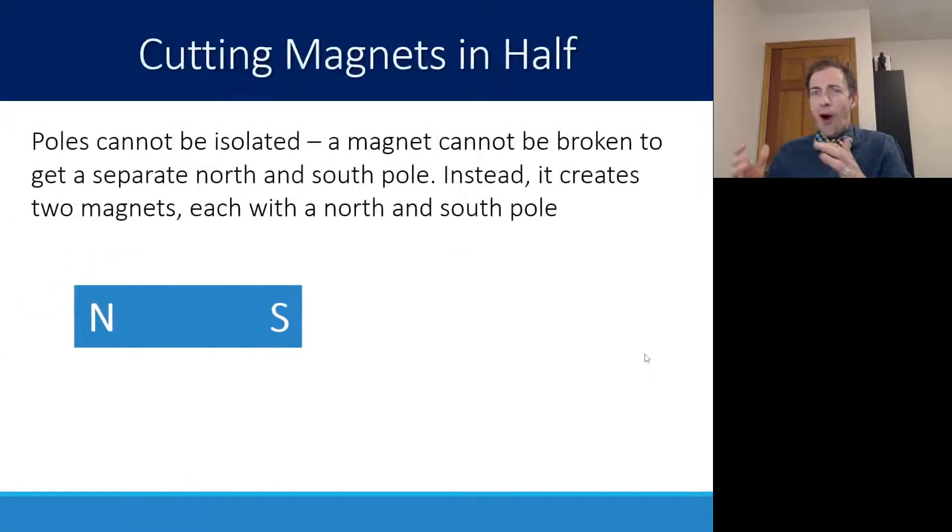There has always been this constant search for something called a monopole magnet. But the reality is, as far as we know, nature doesn't allow a monopole magnet. These poles cannot be isolated. So say you have a magnet here with a north pole and a south pole, and you cut it in half.